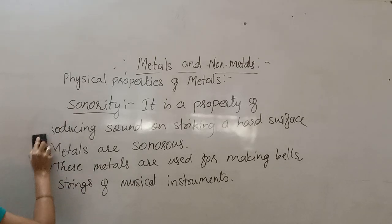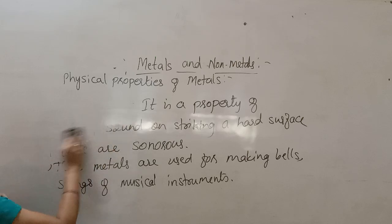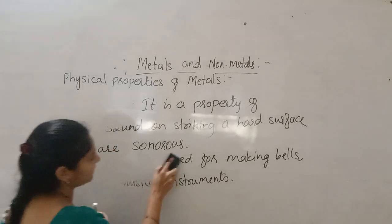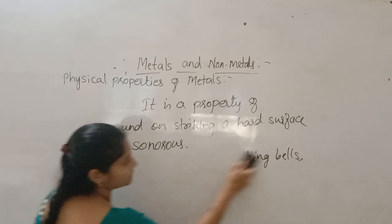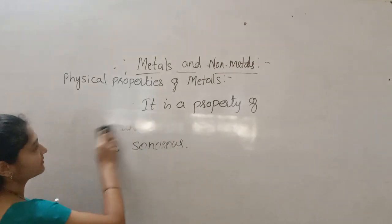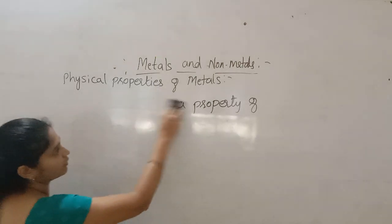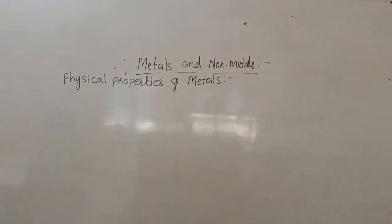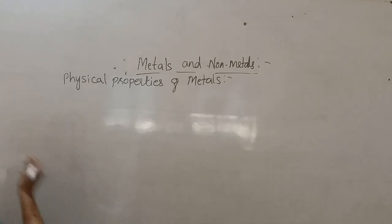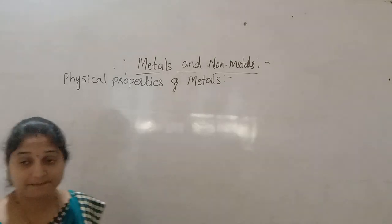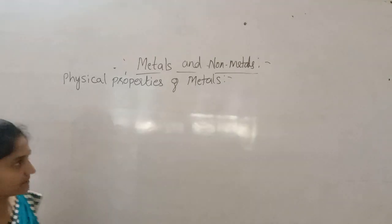Another physical property is density. Density is defined as mass per volume. The unit of density is gram per cubic centimeter, or in SI units, kilogram per cubic meter.